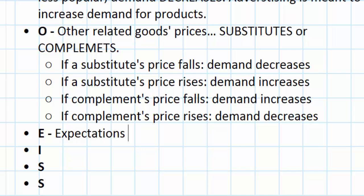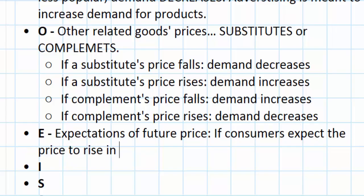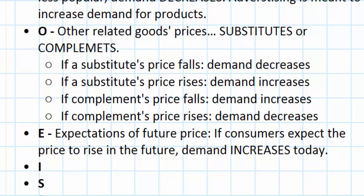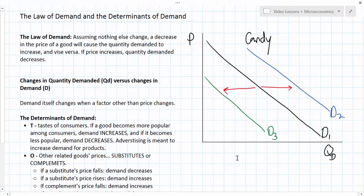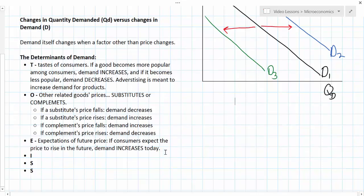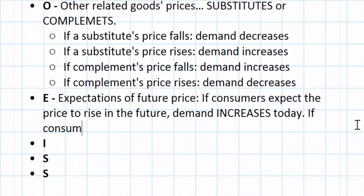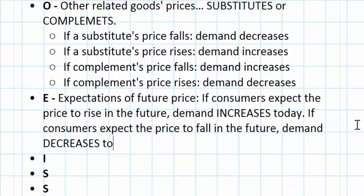The E in our acronym stands for the expectations of future prices. This one's pretty straightforward. If consumers expect the price to rise in the future, demand increases today — you're going to buy it while it's cheap so that you don't have to pay the higher price later. Conversely, if consumers expect the price to fall in the future, demand decreases today, because consumers will postpone their consumption until the price is lower. So expectations of future prices is an important determinant of demand.